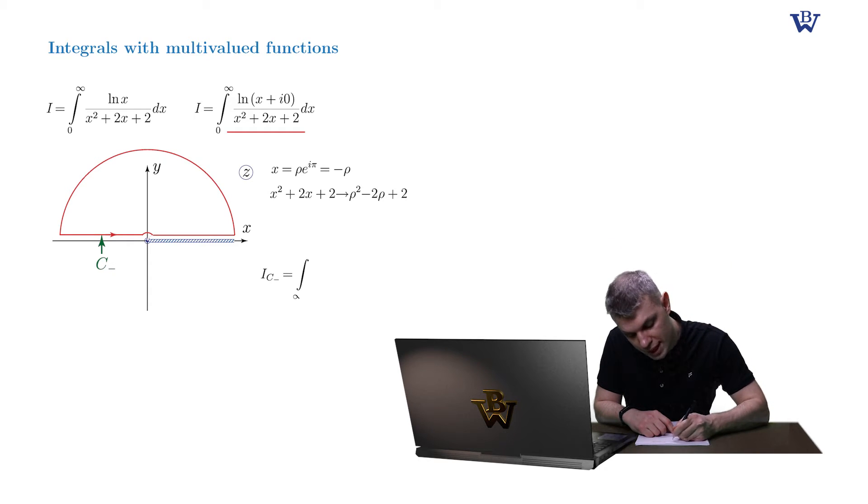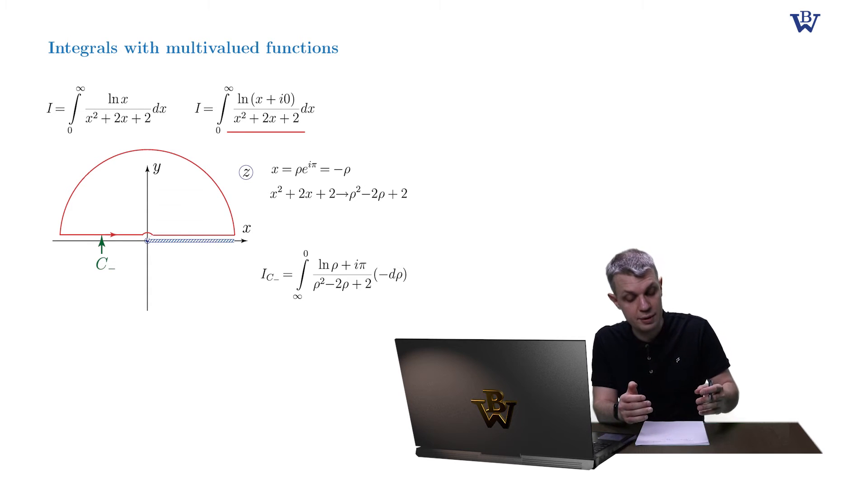So the integral along the left leg of our dumbbell is now equal to the integral from plus infinity to zero of log rho plus i pi divided by rho squared minus 2 rho plus 2, minus zero. And as a result, we won't be able to express this integral via our original one due to the different denominator. So the open dumbbell is not an option.